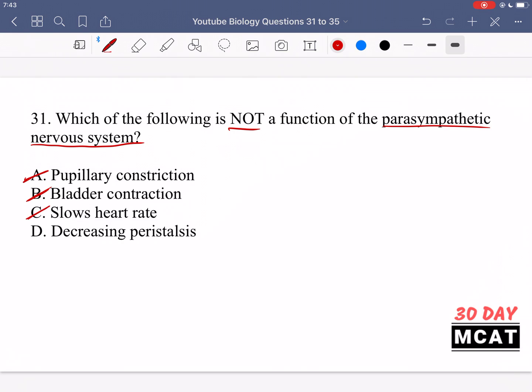C, slowing the heart rate, yes. The parasympathetic nervous system does this. And then finally it's just D, which is decreasing peristalsis, which does not happen in the parasympathetic nervous system.